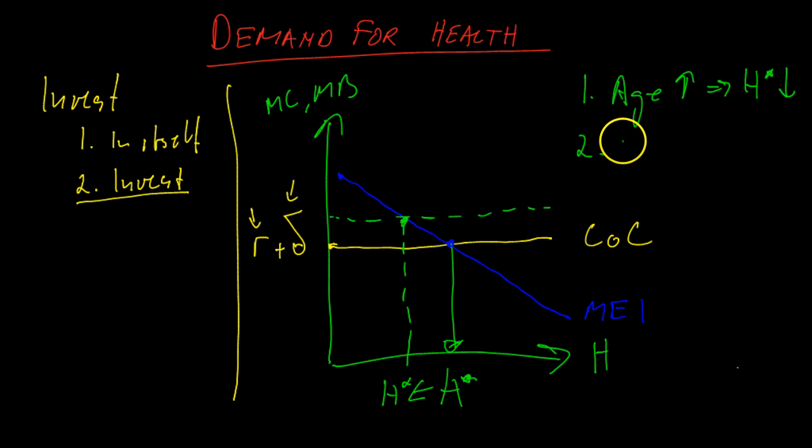And second prediction: what happens if you increase education? Well, if you assume that people that are highly educated also are very efficient when it comes to exploiting the information they get when they invest in something, they can use the information better when it comes to improving their health. Well, then they will invest more in health. So highly educated people will have a higher optimal health stock than other people.